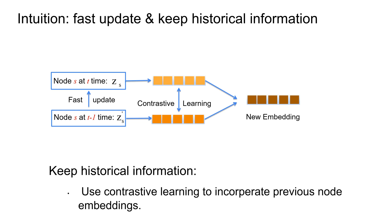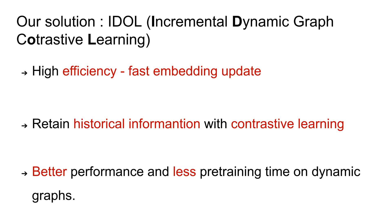Our intuition is that we can incrementally update these embeddings, and then utilize contrastive learning to incorporate the historical information. We propose our method, EIDL. EIDL can achieve high efficiency when updating the node embeddings and keep the historical information for better embedding quality.